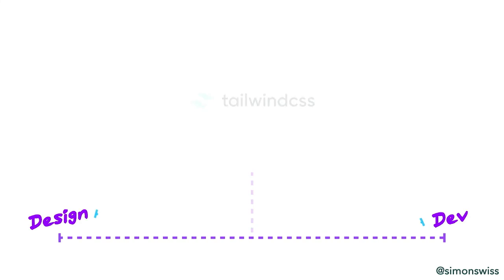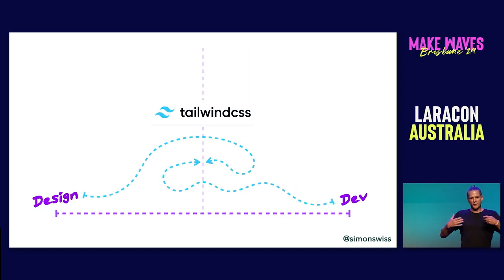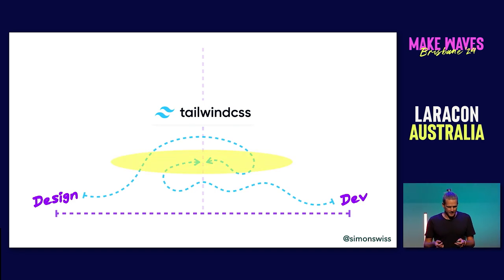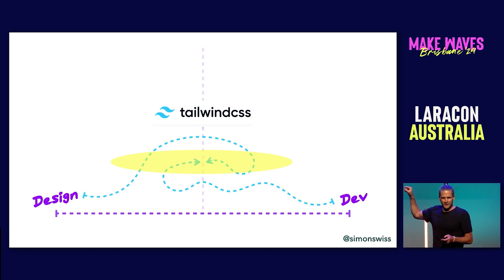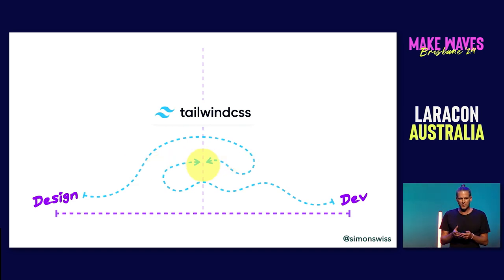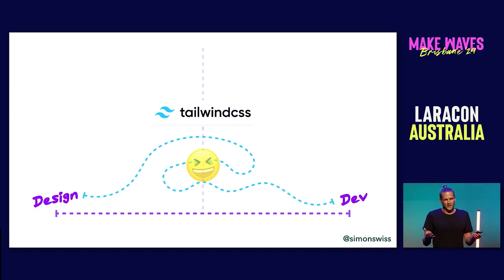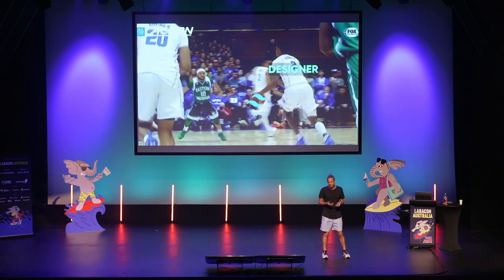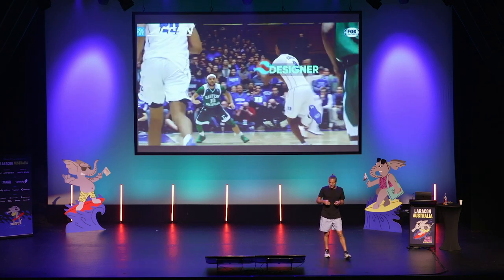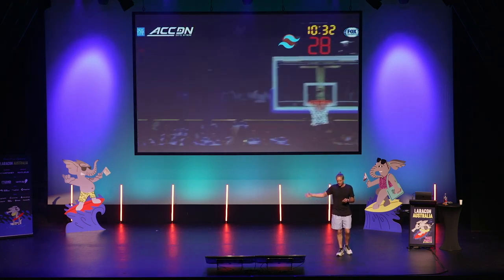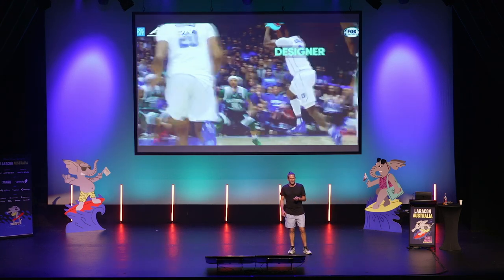To wrap things up: I think Tailwind is the ultimate cross-functional design-dev tool on the market. It takes the handover segment — that used to be the fragile problem space where hiccups and confusion happen — and turns it into the place where designers and developers collaborate together and have a good time. When your designers and developers play on the same field, you can achieve much more impactful and robust applications. Thank you.